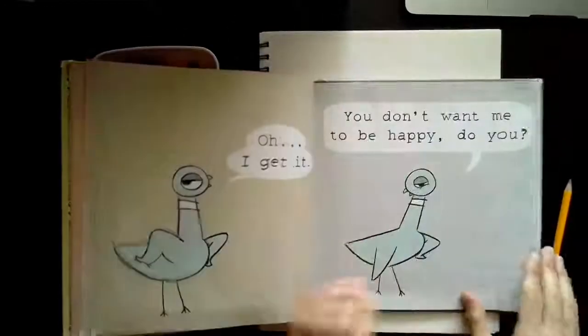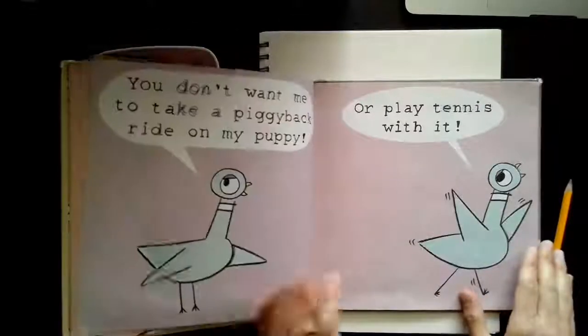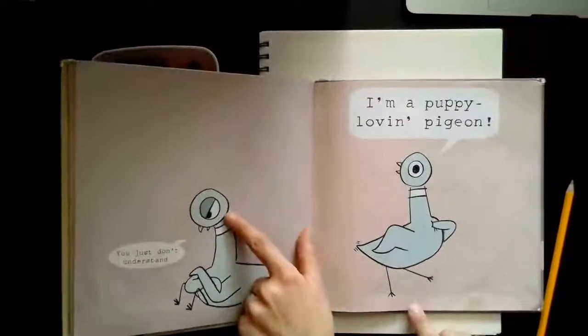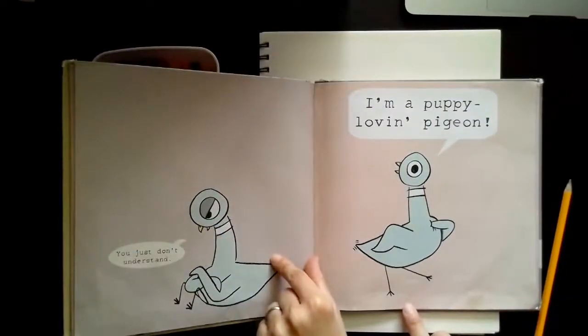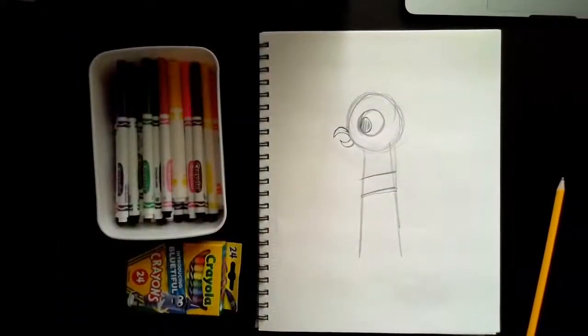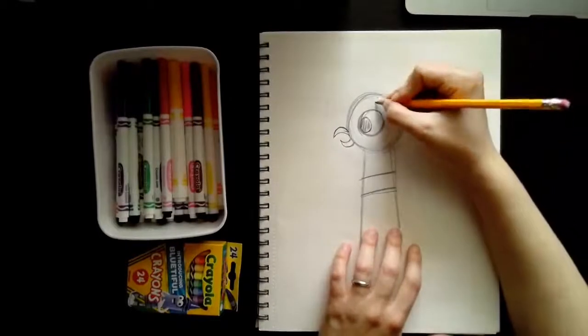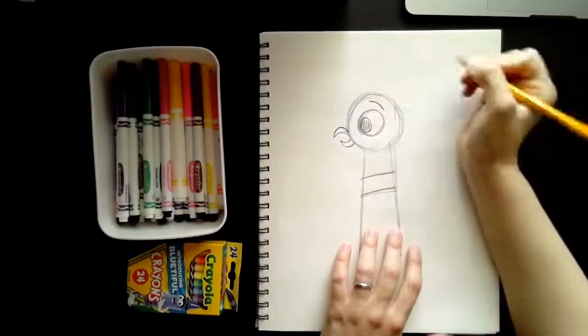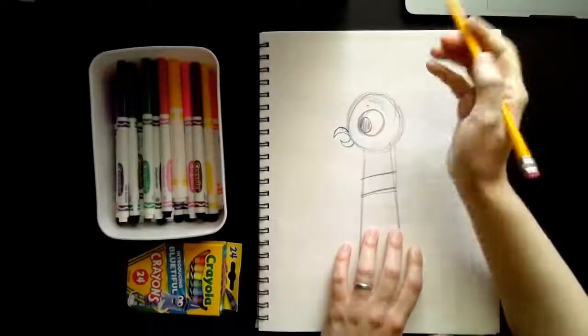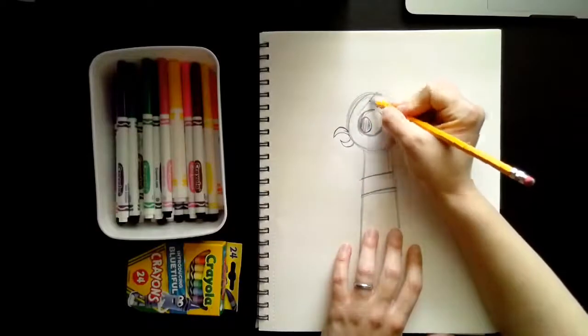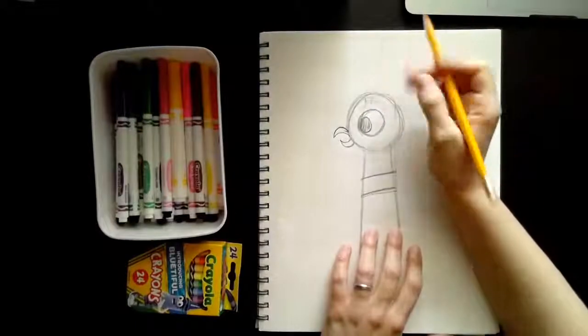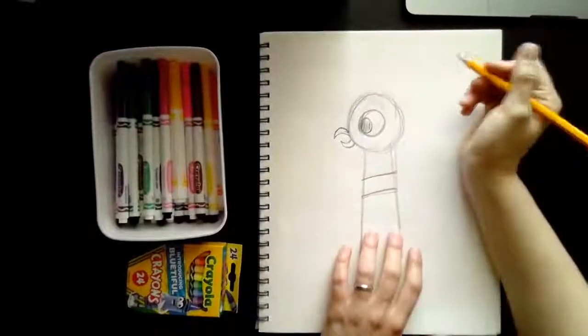And a lot of these emotions he shows with his eyes. So what we're going to do is we're going to take a second to think about what kind of emotion or feeling you want your pigeon to have. Because I can tell by this he's not very happy. And his eyes help show that quite a bit. So there's a couple things you can do.